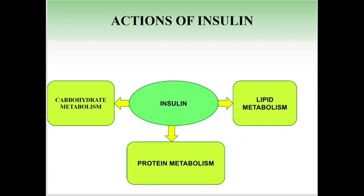Insulin has three main metabolic actions: carbohydrate metabolism, lipid metabolism, and protein metabolism. In carbohydrate metabolism, insulin stimulates the uptake and metabolism of glucose in peripheral tissues, especially skeletal muscles and adipose tissue. It inhibits glucose production in the liver by inhibiting glycogenolysis and gluconeogenesis. By these actions, insulin lowers the blood glucose concentration.